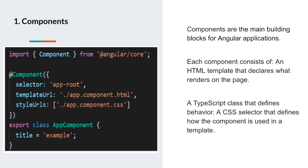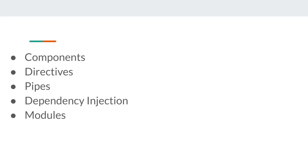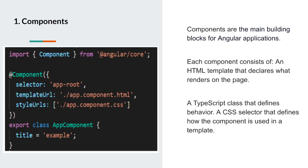Coming to the first thing: components. We have components, directives, pipes, dependency injection, and modules. Starting from the component — what is a component? Components are the main building blocks for an Angular application. This video is not for experts; it is for beginners who are very new to the Angular framework.